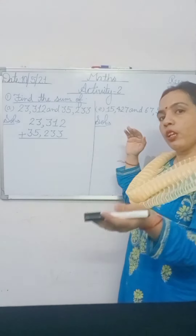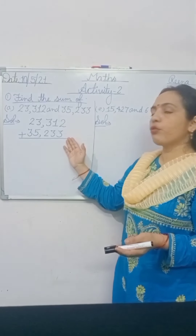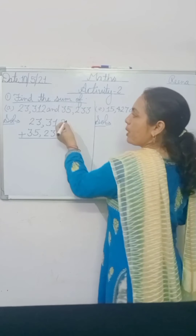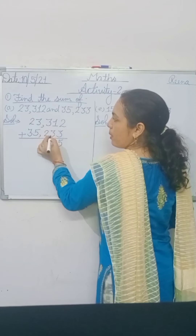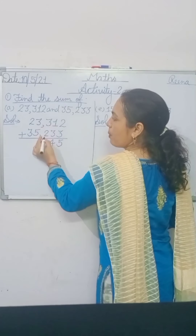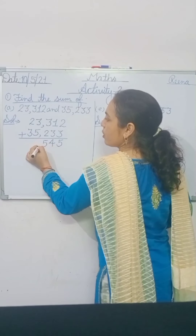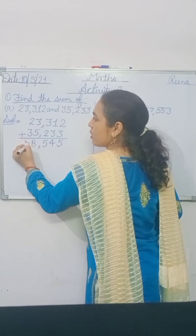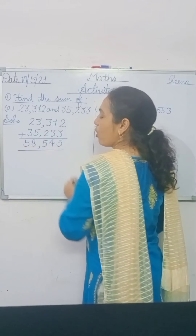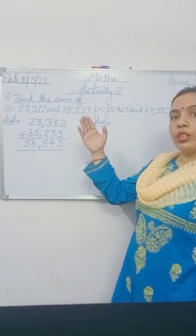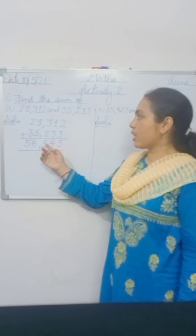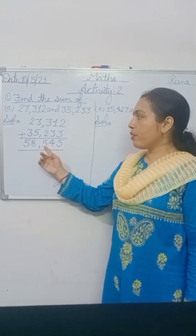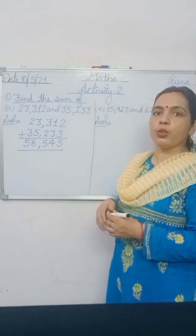Now add your numbers from right side to left side — that means we start addition from the ones side. 3 plus 2 is 5. 1 plus 3 is 4. 3 plus 2 is 5. Now use comma. 3 plus 5 is 8. 2 plus 3 is 5. So 58,545 is your answer.